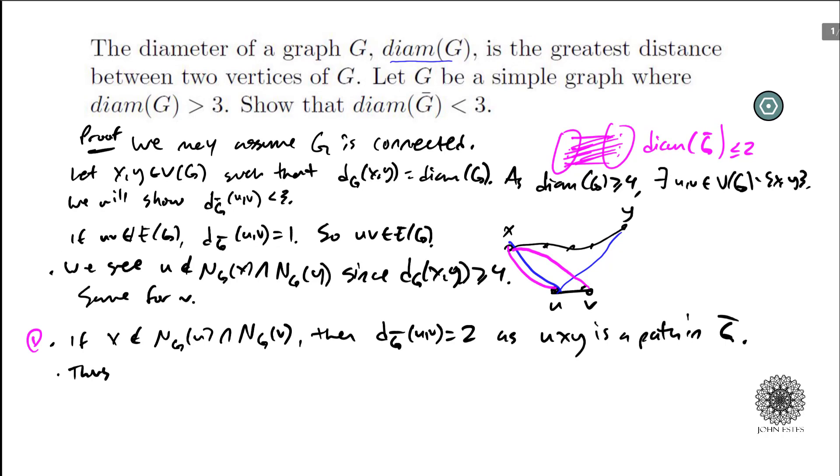So either UX, VY is an edge or are edges and the opposite, VY and UX are not edges or the other case could be the flip. VX and UY are in the edge set. Okay, and that's what I meant up here.